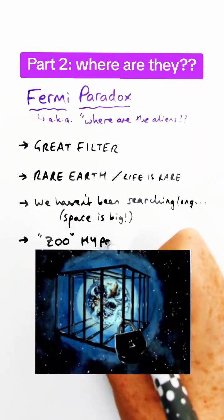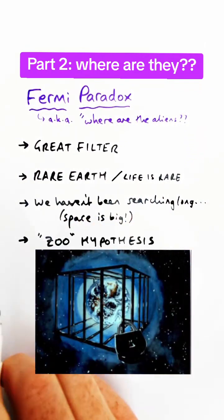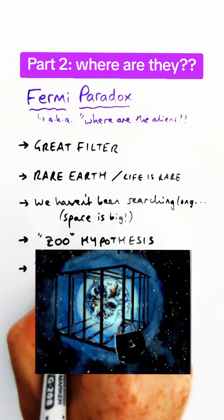The most freaky ones are the zoo hypothesis, which says that aliens have already found us, but they're just watching us and waiting and seeing how we develop.